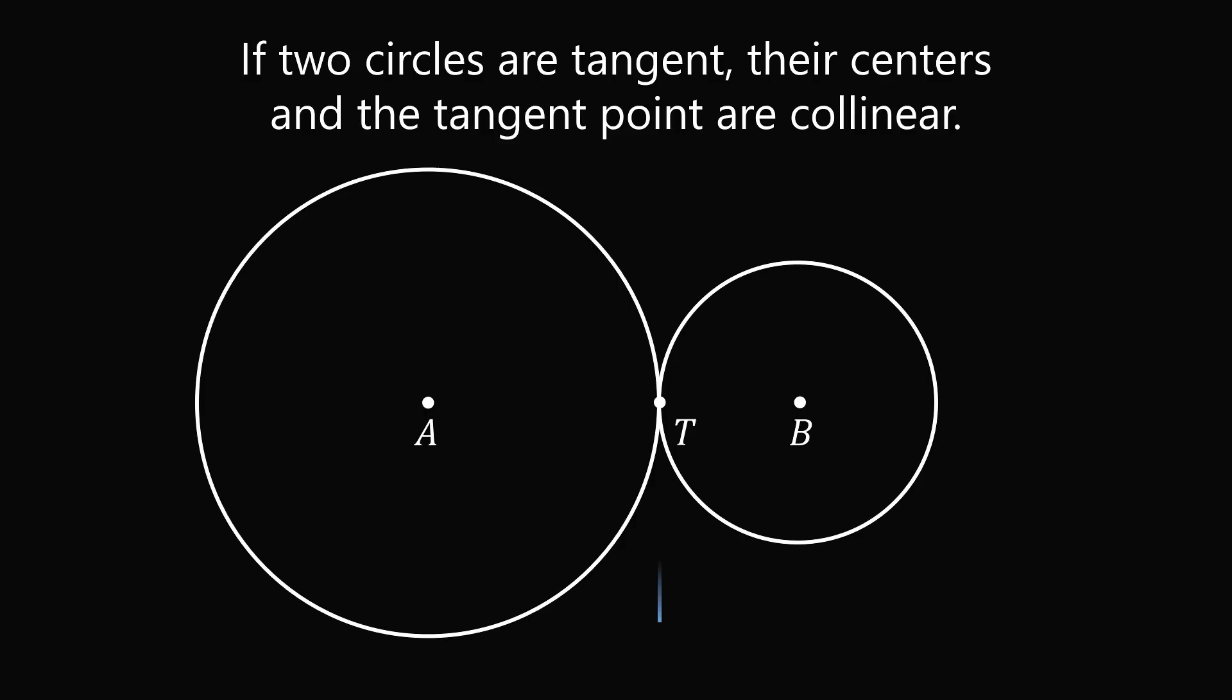We will draw the tangent line that goes through the point T. Because this is a tangent line, AT and the tangent line will be perpendicular. We can do the same thing for circle B. BT will be perpendicular to the tangent line. So we have a right angle over here.